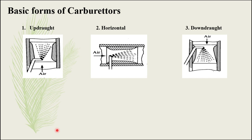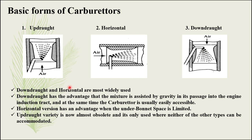Now, the basic forms of carburetors. There are three forms: up-draught, horizontal, and down-draught. When the air flow is in the upward direction then it is called an up-draught carburetor. When the flow of air is in the horizontal direction then it is called a horizontal form of carburetor. And when the flow of air is in the downward direction then it is called a down-draught carburetor.